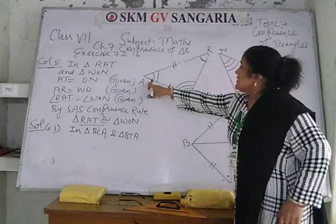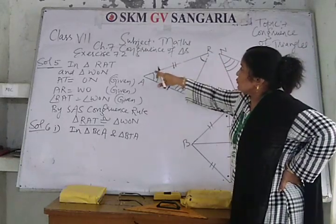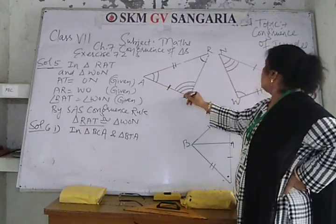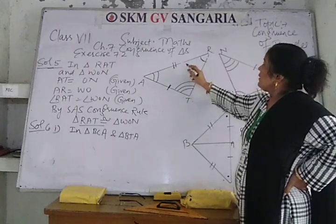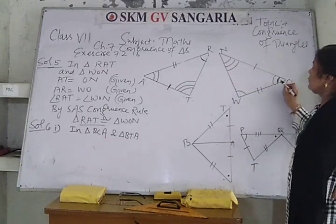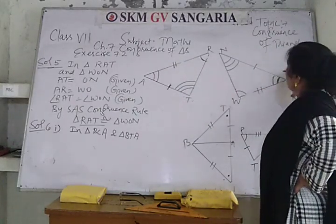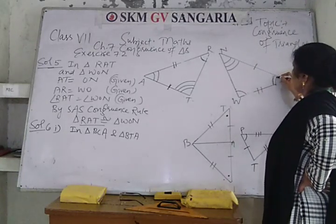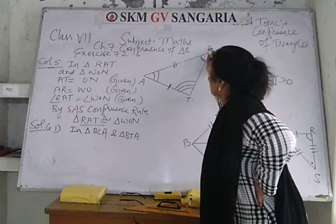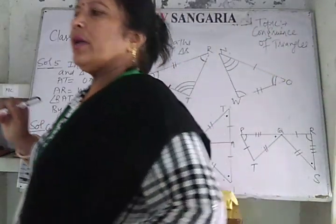First of all, these are the included sides AT and AR, and between these two sides this angle A is being formed. AT is equal to ON and AR is equal to WO. This side AR is congruent to side WO, and between these two included sides angle WON is being formed. Between the included sides AT and AR, angle RAT is being formed — this is also given in the figure.